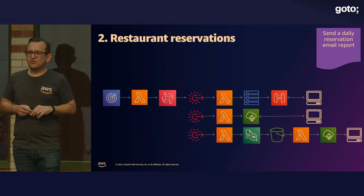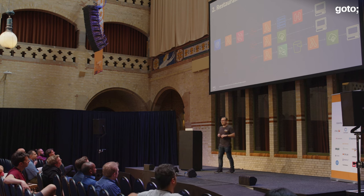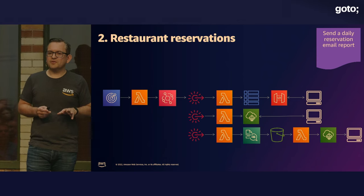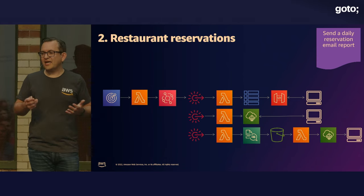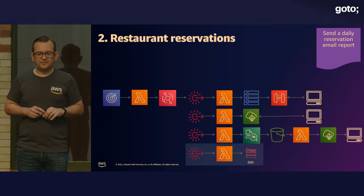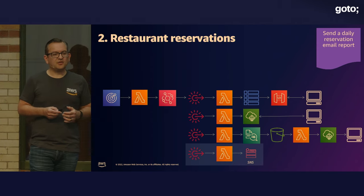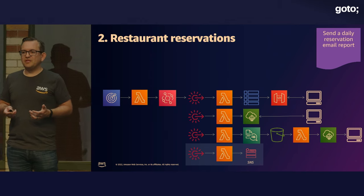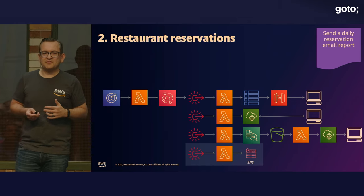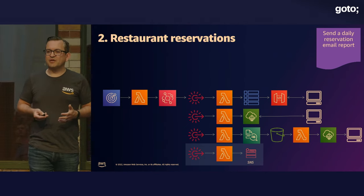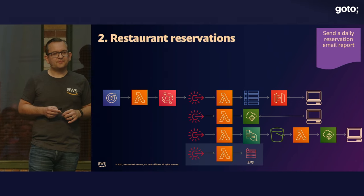Our next challenge: the manager would like a daily reservation email saying how many people booked tables, sent at 11 o'clock each night — some sort of summary report. This turns out to be a really good fit for serverless because it involves a cron job, and cron jobs and serverless kind of go hand in hand. We create another rule at 11 o'clock at night, which calls a Lambda function that queries the DynamoDB table to fetch the list of reservations for the day, and then uses SNS or SES to send the email to the manager or any interested party.